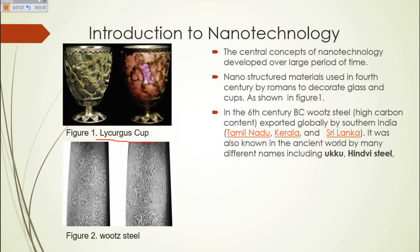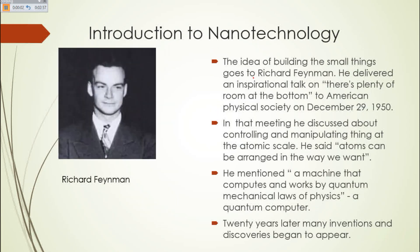Nano-structured materials were used in the 4th century by Romans to decorate glass and cups. When we observe these glass cups, they are decorated by gold and silver nanoparticles. In the 6th century BC, high carbon content steel was exported globally by southern India, also known as the Wootz industry.